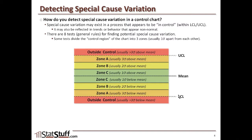Going back to the mean, within one standard deviation of the mean — either one standard deviation above or below — this is what we're calling Zone C.